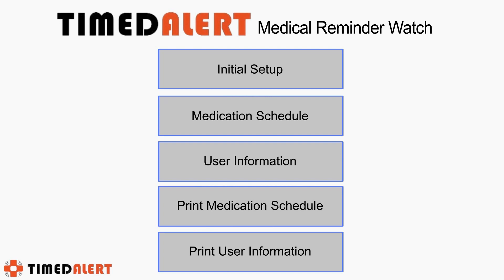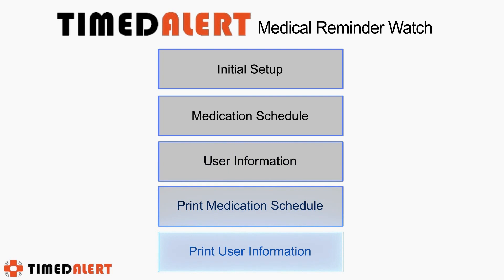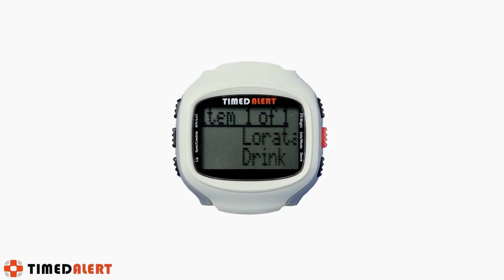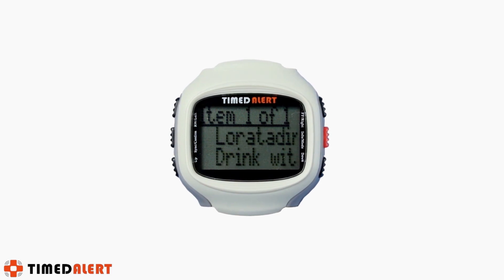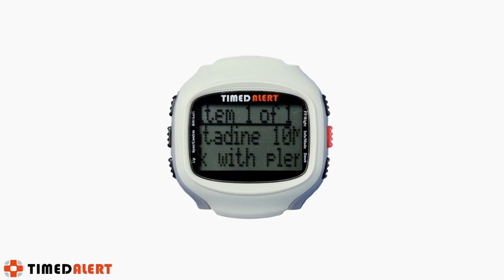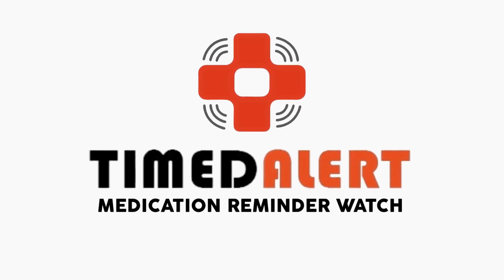At this point, you can program your user information into the watch by following the same uploading procedures as before. As an added advantage, the watch also allows you to print out both your medication schedule and user information by entering the respective menus and clicking the print button. You are now ready to use the medication reminder watch. A detailed description of the various features and functions can be downloaded from the Timed Alert website's user guide in the support tab. Thank you for using the Timed Alert Medication Reminder Watch.